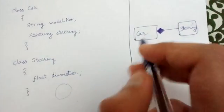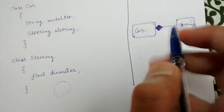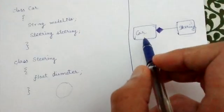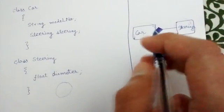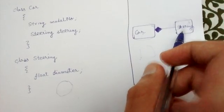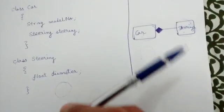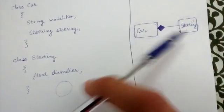This is the difference between the aggregation relationship from the last class. In aggregation, steering can exist by itself and can be shared between two or more classes. But here, in composition, steering is part of one and only one car object.